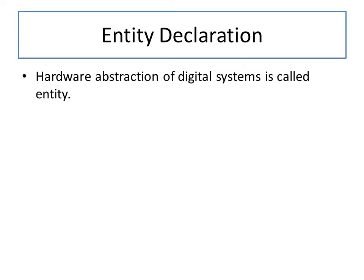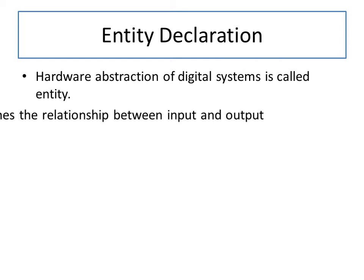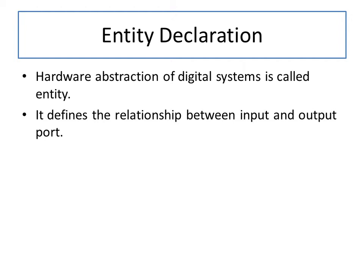Entity declaration is a hardware description of a digital system — a hardware abstraction. Whenever we deal with any circuitry, we have certain input terms and output terms connected with logic gates. This information about the correlation between which input terms and output terms are being used is basically called hardware abstraction, and it is captured by the entity declaration.